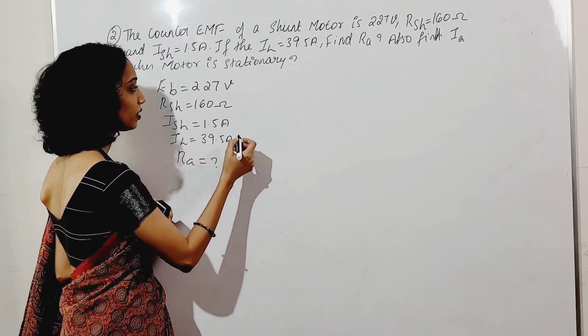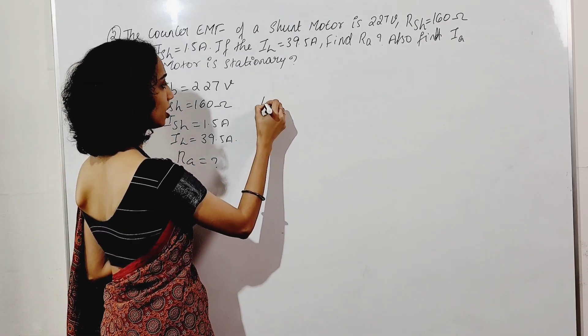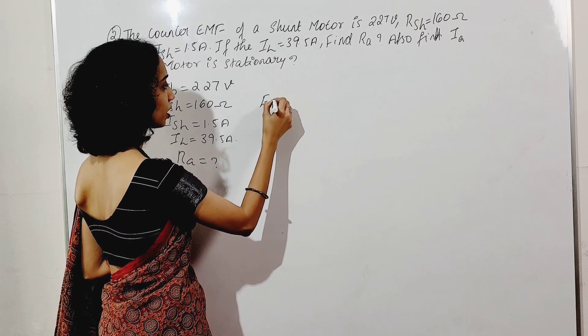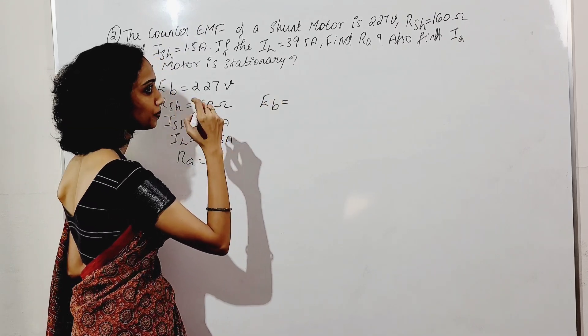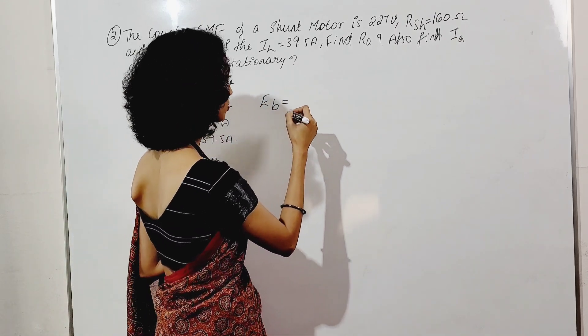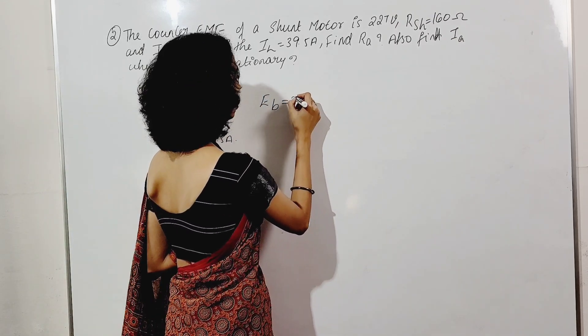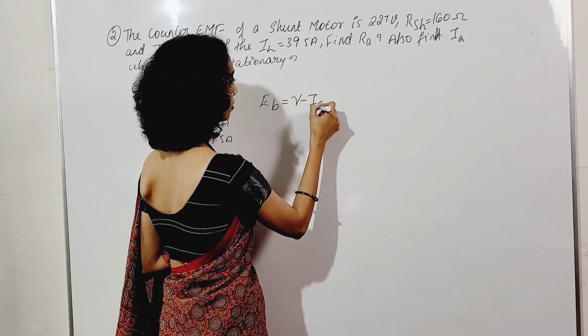Back EMF is the equation: EB is equal to V minus IA*RA.